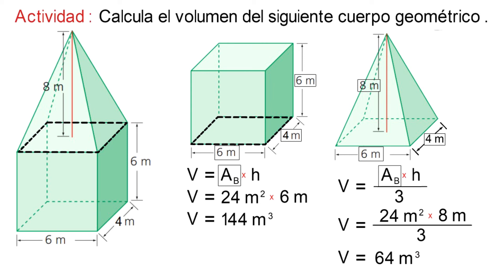Ahora bien, para determinar finalmente el volumen total del cuerpo geométrico compuesto, sumamos los resultados de los volúmenes anteriormente calculados y nos quedaría 208 metros cúbicos. Y este sería el resultado final.